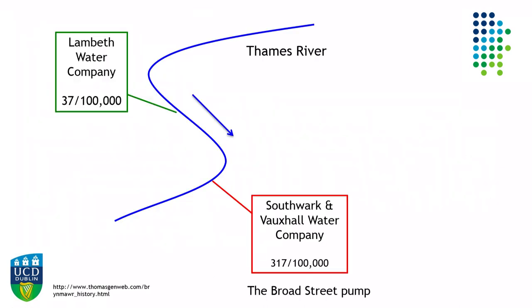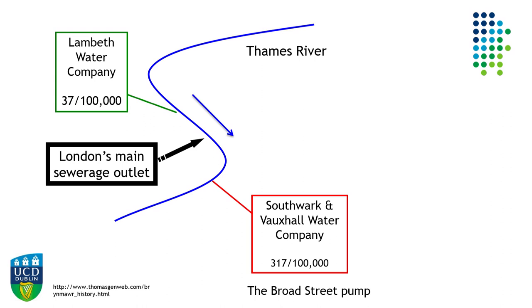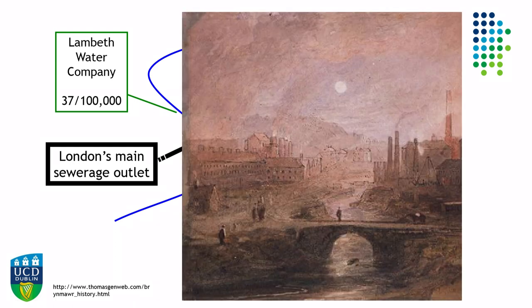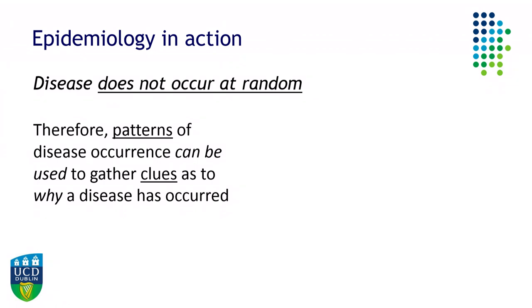Looking now with 21st century eyes, we can see what happened. Two water companies supplied different areas of London, and the company supplying the Broad Street pump had case rates about 10 times higher than the other companies. The key was that London's main sewerage outlet was actually upstream from where that company was drawing water — clearly outrageous in retrospect, but people didn't know that at the time.